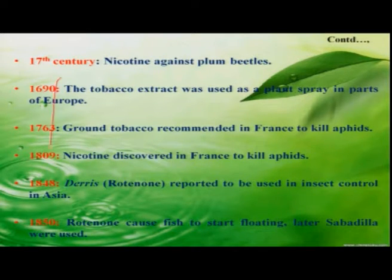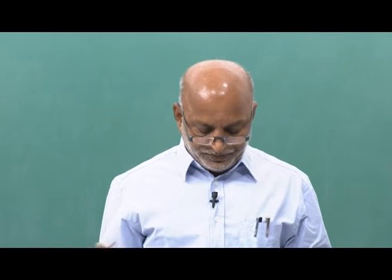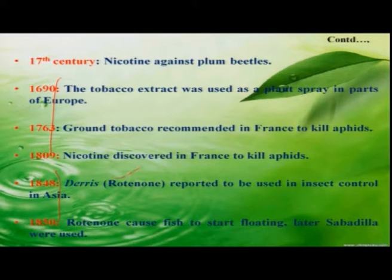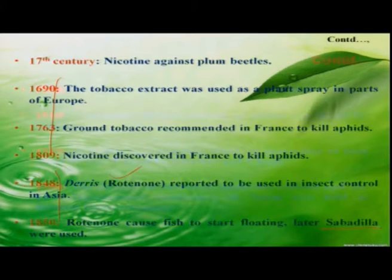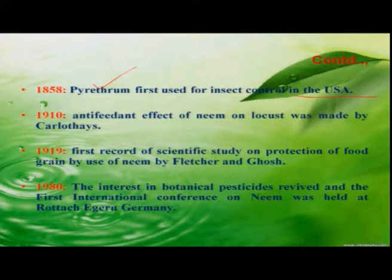Among them, tobacco and derris — that is rotenone products — were largely used for the management of various insect pests across the country, including India. Rotenone was much used, but afterwards, because of its ill effects on fish, another product, sabadilla, was used for the management of insect pests. Another important botanical, pyrethrum, was first used for insect control in the USA during 1858.